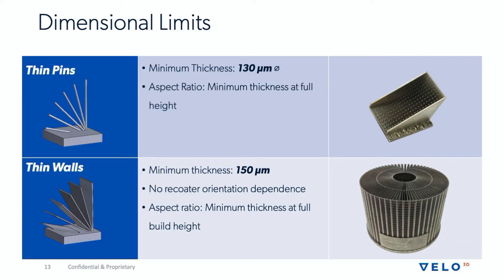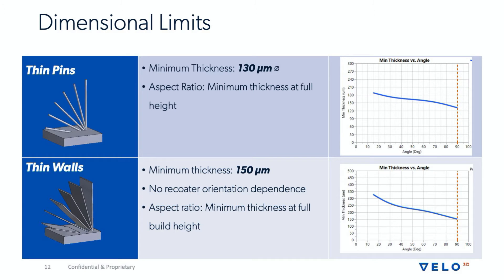Thin pins are a good example of what Velo3D is capable of. Thin pins can be printed to a minimum thickness of 130 microns in the vertical direction. As they approach lower angles, the minimum thickness increases to about 190 microns. We're also not limited by the aspect ratio of these parts — we can print as high as we want for as long as we want. Thin walls are similar; minimum thickness is about 150 microns with no recoater orientation dependence. The recoater doesn't touch the part. There are similar limitations at lower overhangs, with increased thickness to some degree.